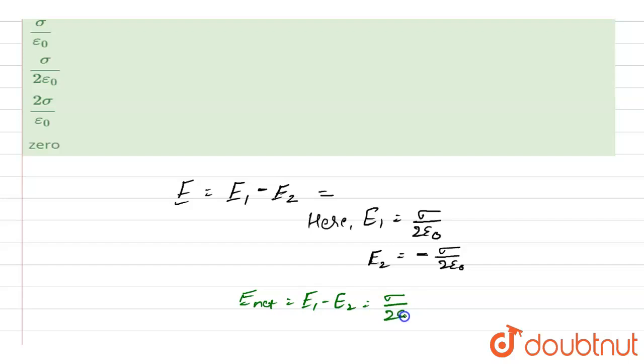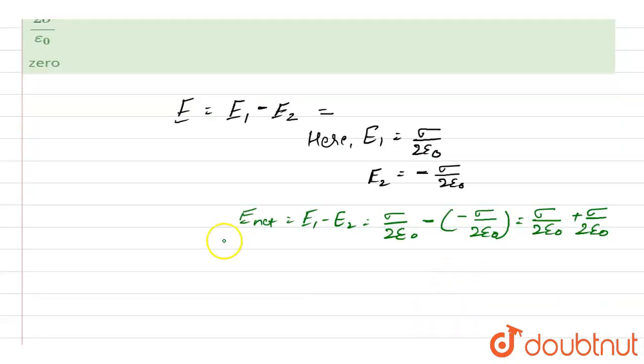E net comes out to be E1 minus E2. So sigma upon 2 epsilon naught minus minus sigma upon 2 epsilon naught. So it comes out to be sigma upon 2 epsilon naught plus sigma upon 2 epsilon naught. So furthermore it comes out to be E net is equal to sigma upon epsilon naught.